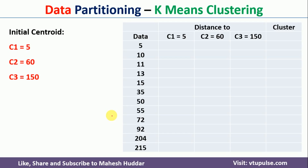The third method is data partitioning using a clustering method — specifically k-means clustering. To apply k-means clustering we need to consider centroids. Since I want to divide the data into three groups, I need three centroids. I have randomly selected: c1 equal to 5, c2 equal to 60, and c3 equal to 150. The next step is to calculate the distance from each data point to each of these centroids.